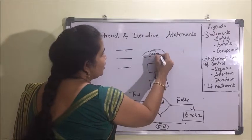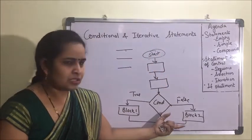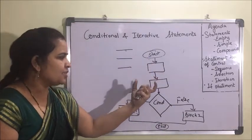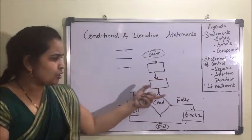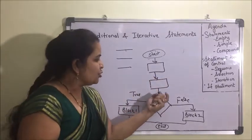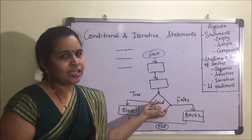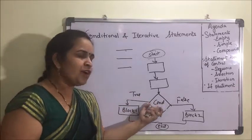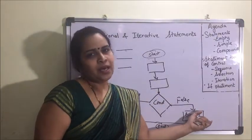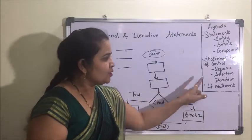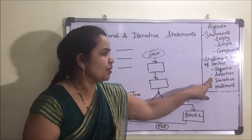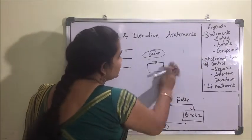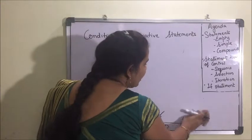So the selection procedure works like this: a statement executes, then a second statement, then a condition is checked. If the condition is true, a particular block of statements is executed. If the condition is false, a second block of statements is executed. That is why it is known as selection statement flow of control.